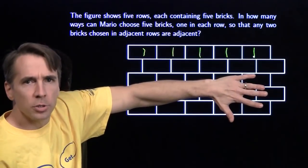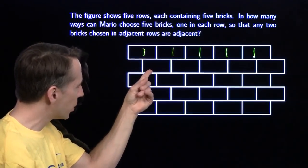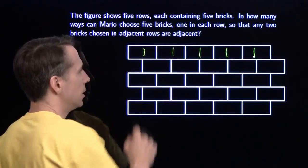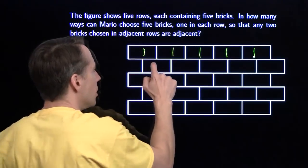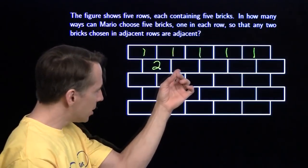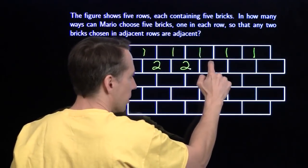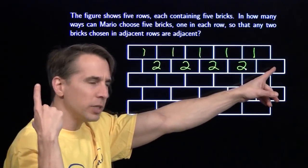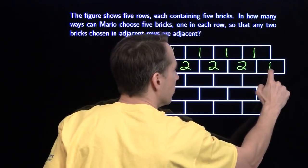What if we have two rows? Now let's look at this brick here. How many ways can Mario, starting from the top, get to this brick? Well, he could pick this one and then this one, or he could pick this one and then this one. He can't choose one of these three and then go over here and choose this one, because they're not adjacent. So that gives us two ways to choose this brick. Same game here — to get to this brick, Mario can go here and then here, or here and then here. This last brick Mario can only get to in one way — he has to start here.